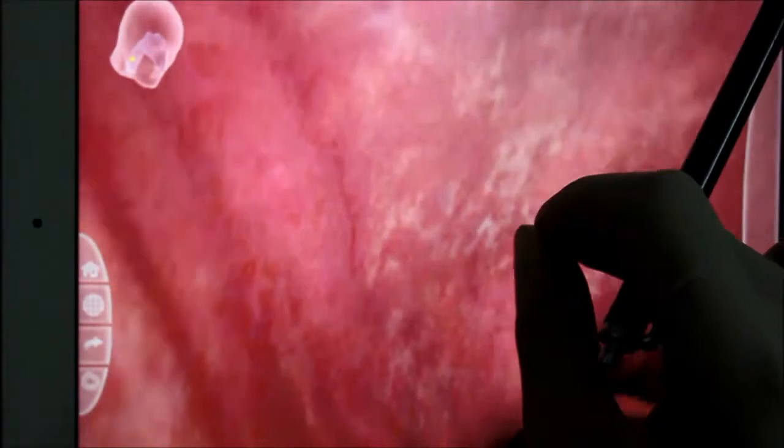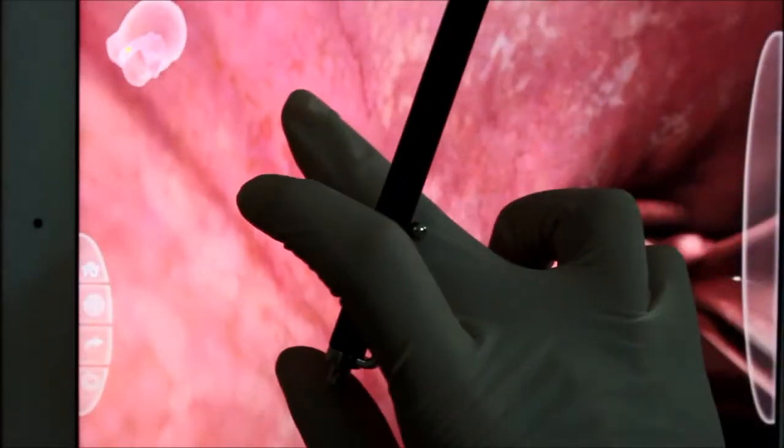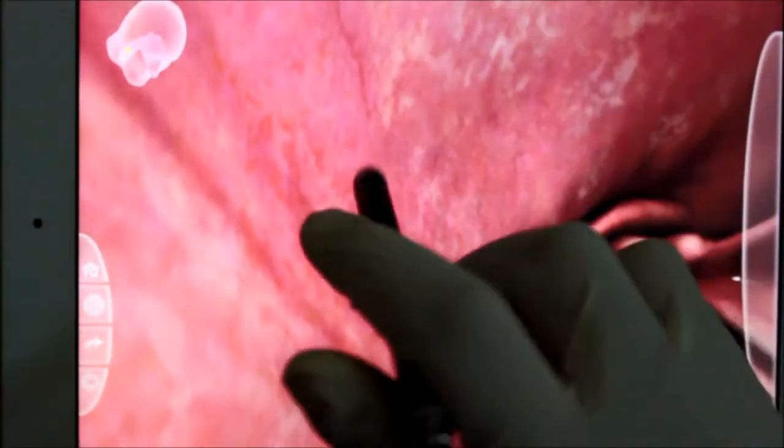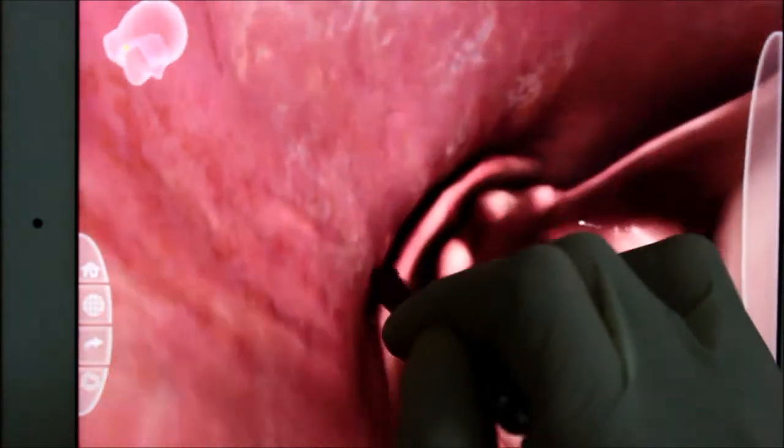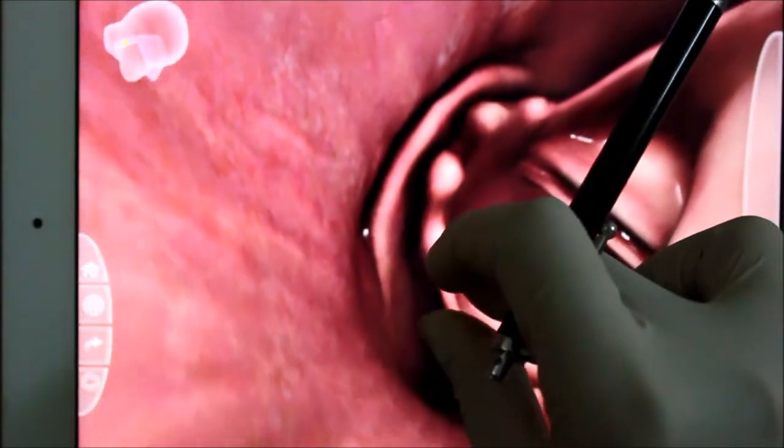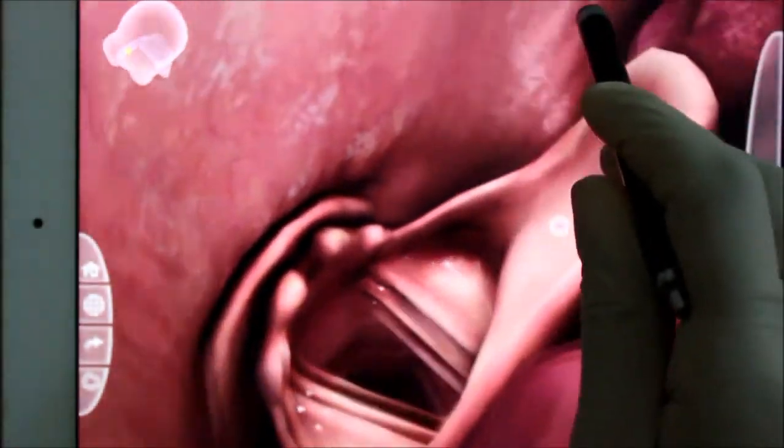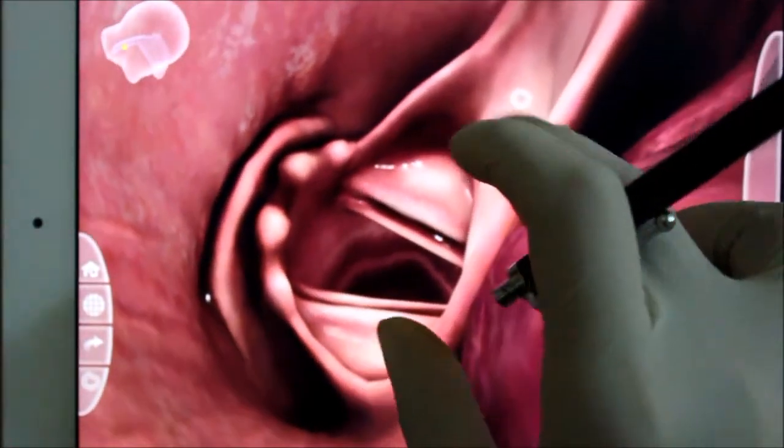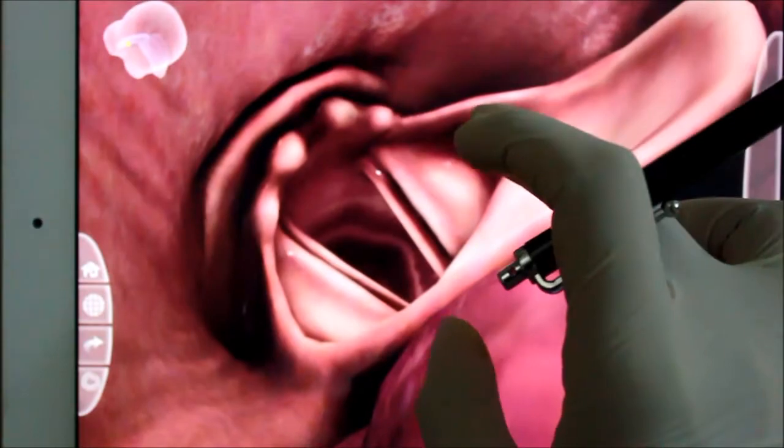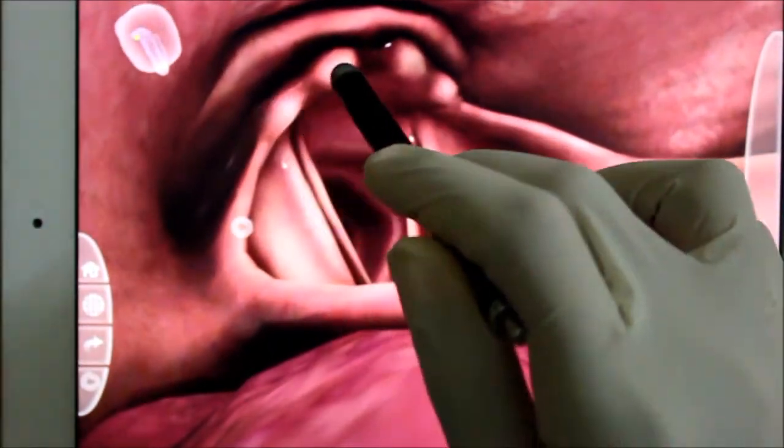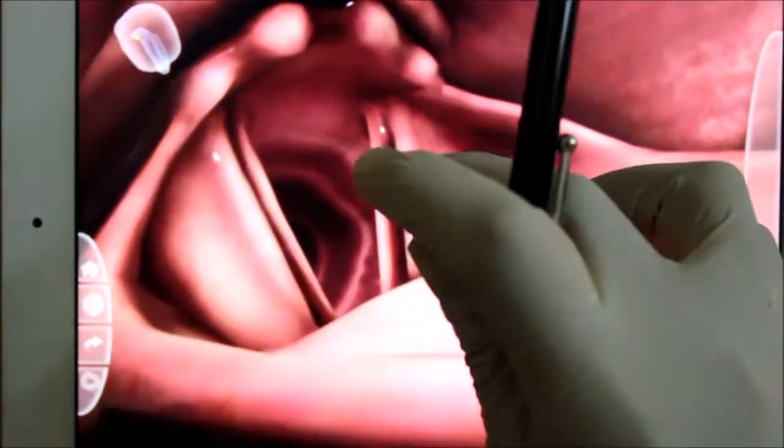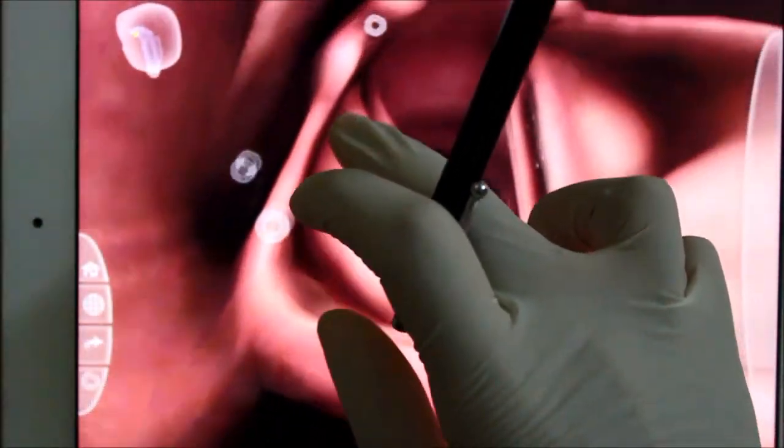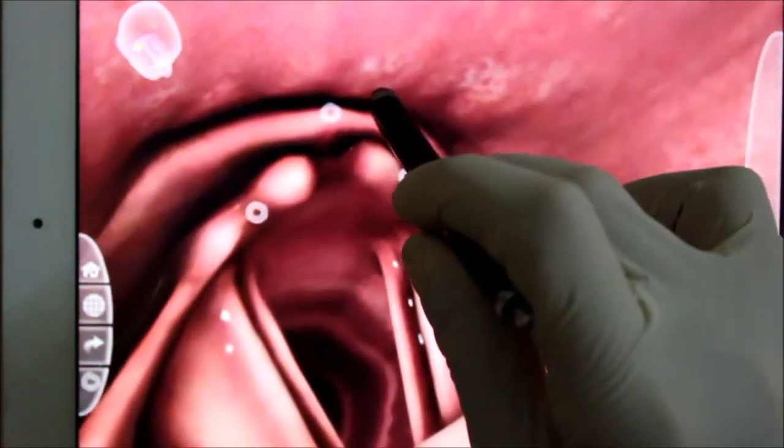the posterior wall of the oropharynx and laryngopharynx. As we know, the pharynx is a fibromuscular tube attached from below the skull base extending to the cricoid cartilage. Now we can appreciate the cartilage. You can see here the bumps - they are part of the arytenoid. We have different types of cartilage in